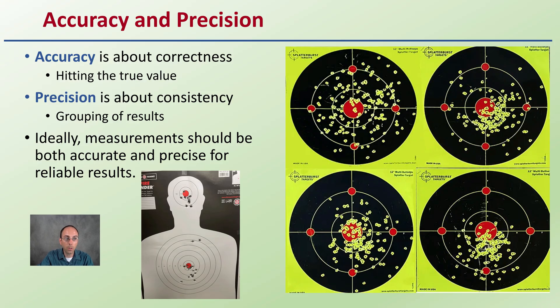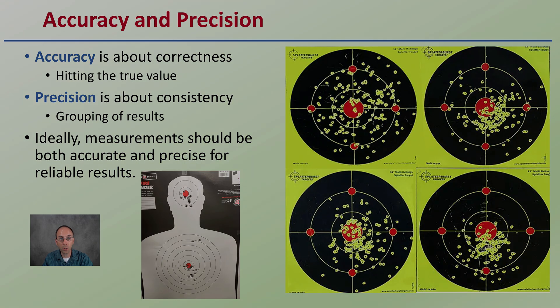Now, accuracy and precision, you can see here, accuracy is about the correctness or hitting the true value. Precision is about the consistency or grouping of the results. Ideally, measurements should be both accurate and precise for reliable results. Think about the dartboard here as our example, this might help you distinguish the difference between accuracy and precision.